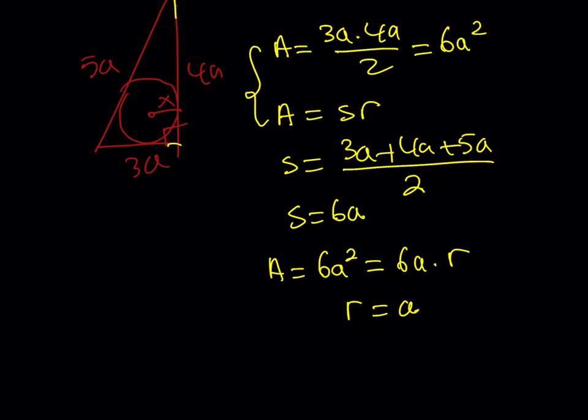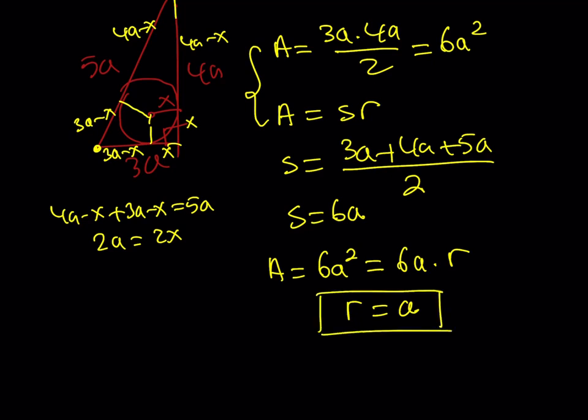Well, it's got to be a. If you make these connections, you're going to notice that if this is x, this is also x, and then this needs to be 3a minus x, this needs to be 3a minus x, this is 4a minus x, this is 4a minus x. If you draw a tangent to a circle from outside, those two pieces are going to be the same length. So here we get that 4a minus x plus 3a minus x equals 5a. This gives you 7a minus 5a is 2a, 2a equals 2x, x equals a. You can also verify it differently.